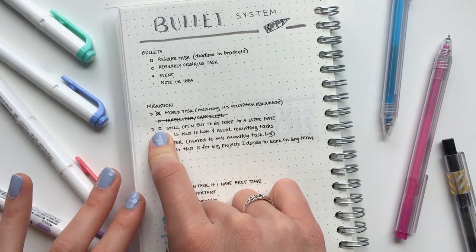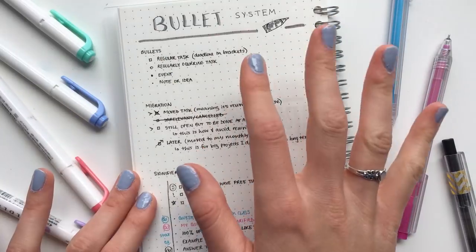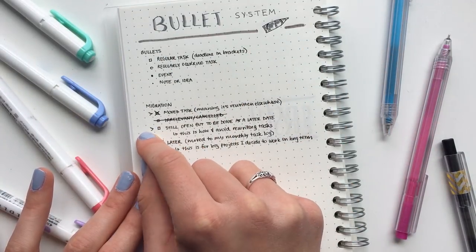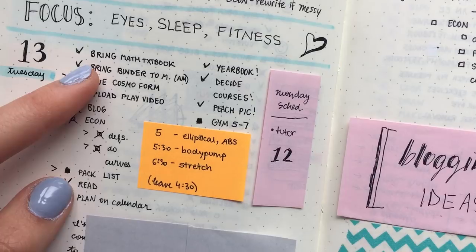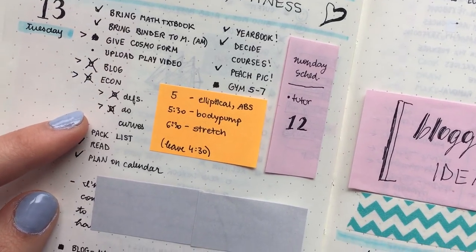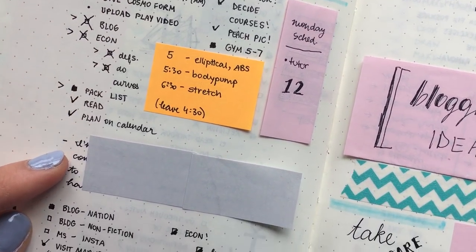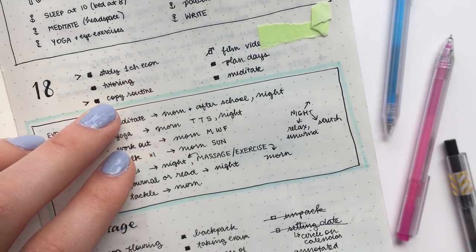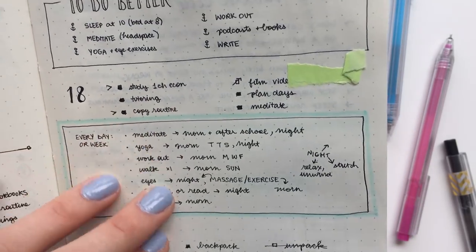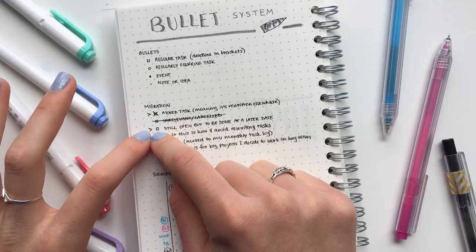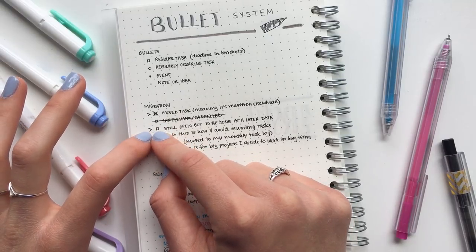If I haven't yet completed the task, but I want to do it at a later date, I'll put a little arrow like this and leave it open. And this is how I avoid rewriting the tasks day to day. And I'll simply, on the day of, I'll simply take a look at previous day's unfinished tasks that look like this, and I'll check them off when I finish them.